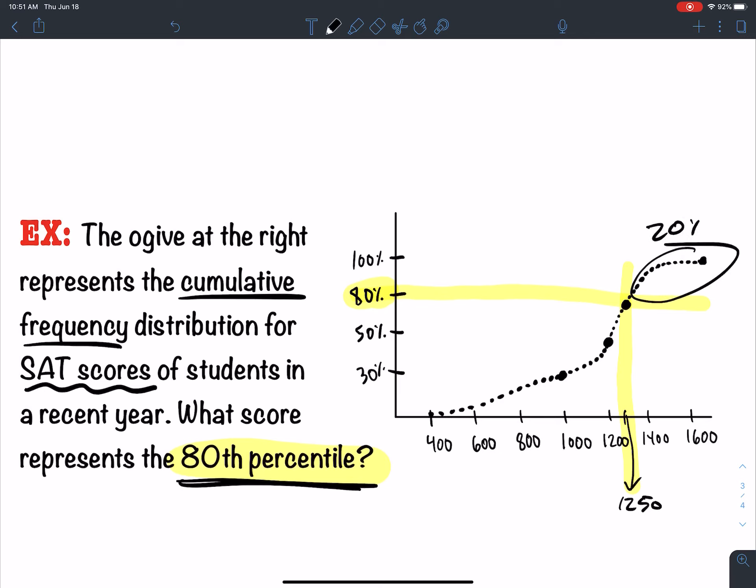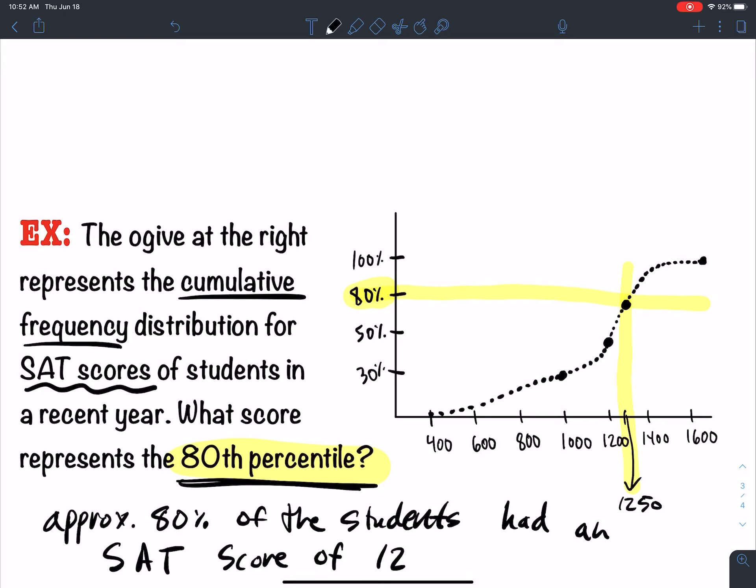There were 20% that scored higher than you if you're at the 80th percentile, but you beat out 80% of the people who took it. So approximately 80% of the students had an SAT score of 1250 or less. That score of 1250, you beat out 80% of the students.